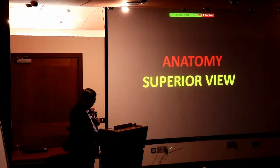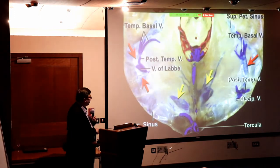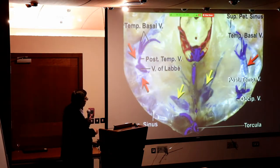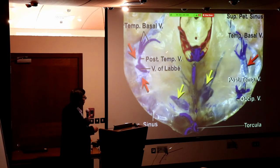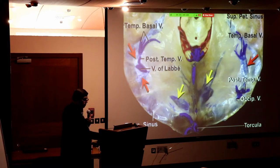Looking at the brain stem from the top: the tentorium separates the supratentorial part from the infratentorial part. The midbrain passes through the hiatus within the tent.